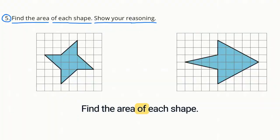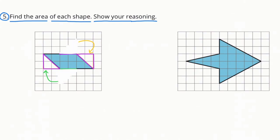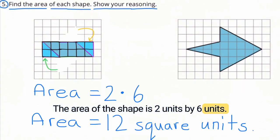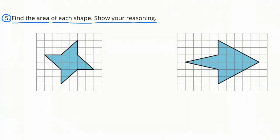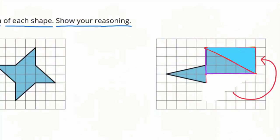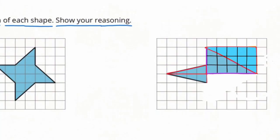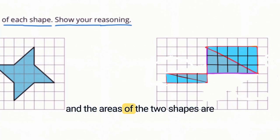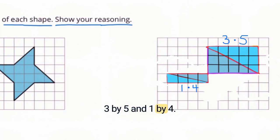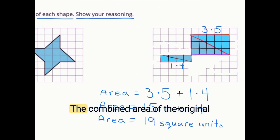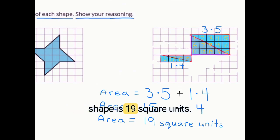To be a parallelogram, the opposite sides would have to be parallel and be the same length. Number 5: Find the area of each shape. Show your reasoning. The area of the first shape is 2 units by 6 units, which is 12 square units. The area of the second shape is also 2 units by 6 units, which is 12 square units. The areas of the two parts of the third shape are 3 by 5 and 1 by 4. 3 times 5 is 15, and 1 times 4 is 4. 15 plus 4 is 19, so the combined area is 19 square units.